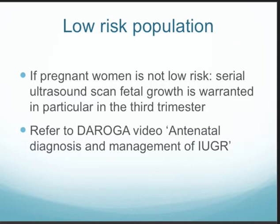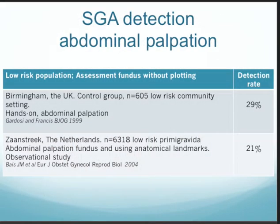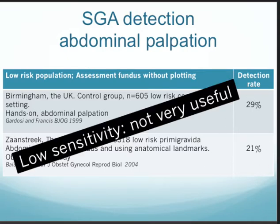There are four methods to detect growth restriction or SGA in a low-risk population. The first is a clinical hands-on method, referring to anatomical landmarks such as the symphysis pubis, umbilicus, and xiphoid process. However, two studies show that the detection rate of SGA by abdominal palpation hovers between 21 and 29 percent — not good enough, as the sensitivity is too low.